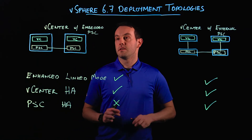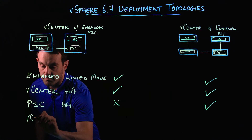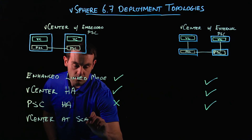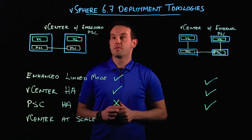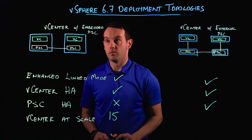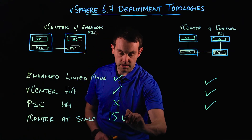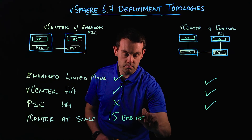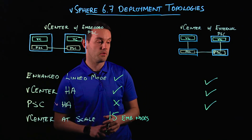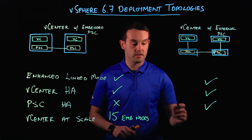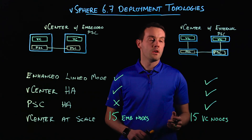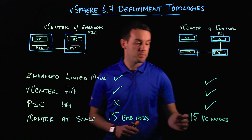The last thing to discuss is vCenter at scale. Both deployment topologies can support up to 15 vCenter nodes. With vCenter with an embedded PSC, we can have 15 embedded nodes in a single SSO domain, and we can also enable vCenter HA for each of those nodes. With vCenter with an external PSC, we also support 15 vCenter nodes with support for 10 external PSC nodes.